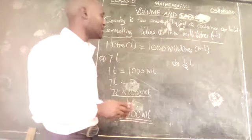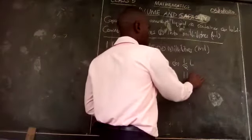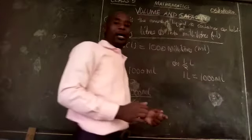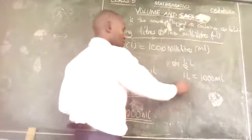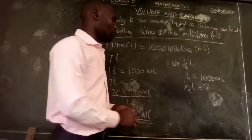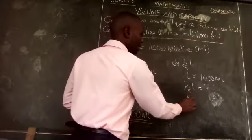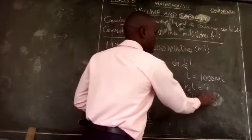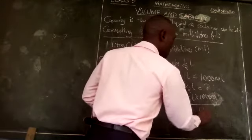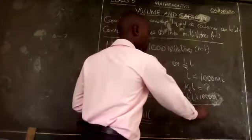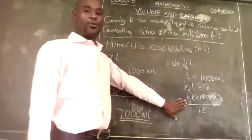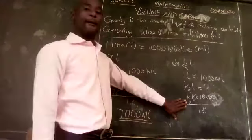We shall say 1 liter is equal to 1000 milliliters. How about half a liter? Half a liter is equal to how many milliliters? We shall take a half a liter multiplied by 1000 milliliters divided by 1 liter. Liter with liter cancels. Now we are multiplying a half by 1000.